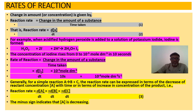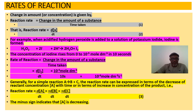For example, when acidified hydrogen peroxide is added to a solution of potassium iodide, iodine is formed. The concentration of iodine rises from zero to 10⁻⁵ mol/dm³ in 10 seconds. The rate is therefore 10⁻⁵ mol/dm³ divided by 10 seconds.